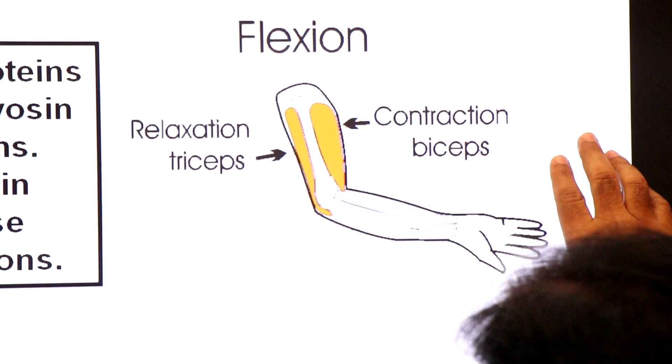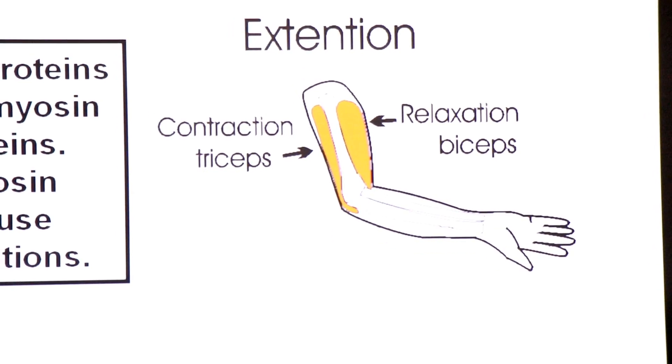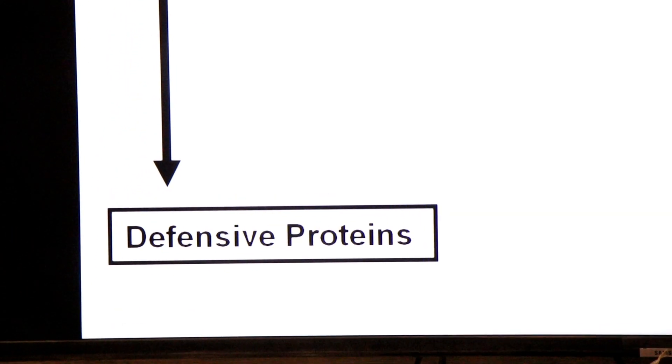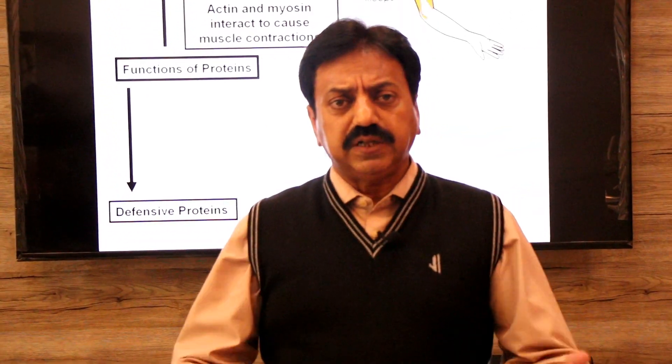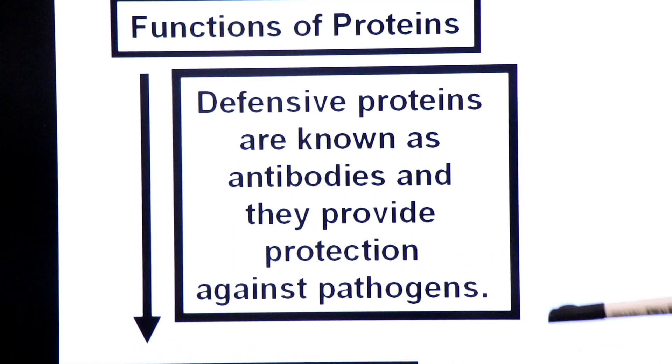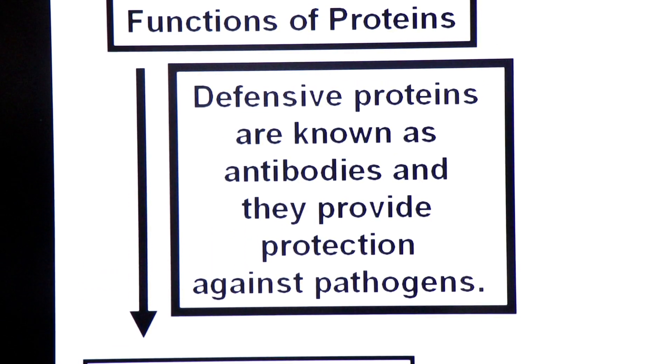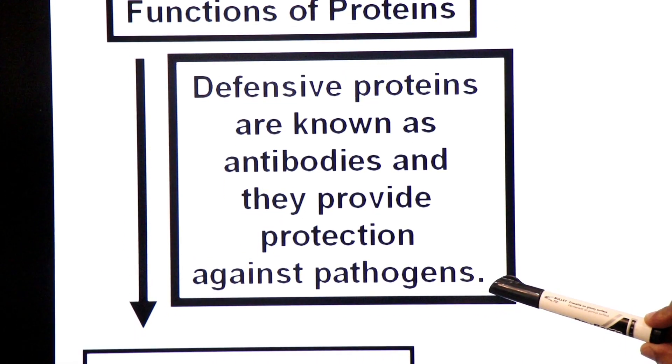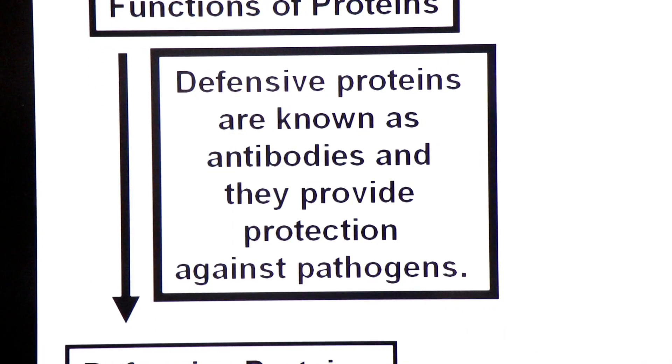Another function of proteins is as defensive proteins. When germs, pathogens, or antigens enter our blood, white blood cells help to kill them. A special kind of white blood cell — the plasma cell — releases antibodies against these antigens. Antibodies are the defensive proteins. Defensive proteins known as antibodies provide protection against pathogens, which are the causative agents of diseases.